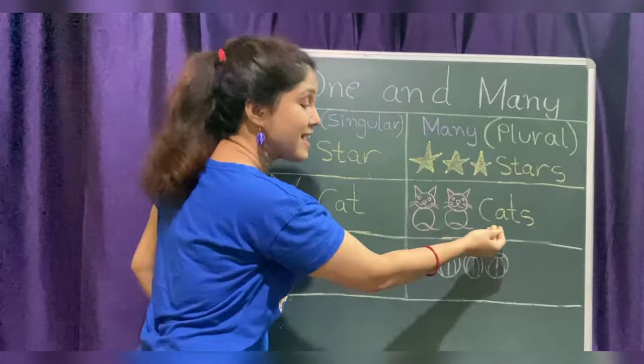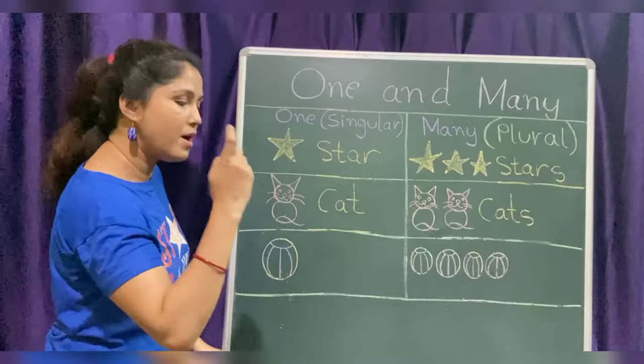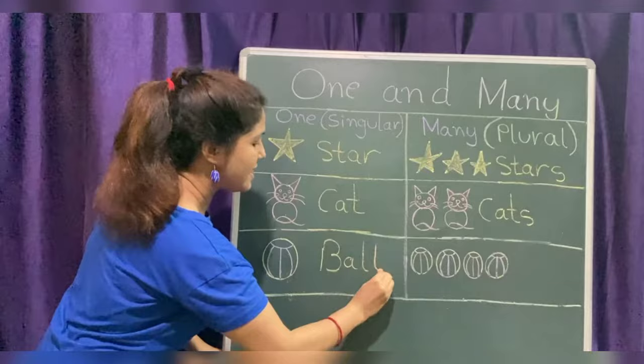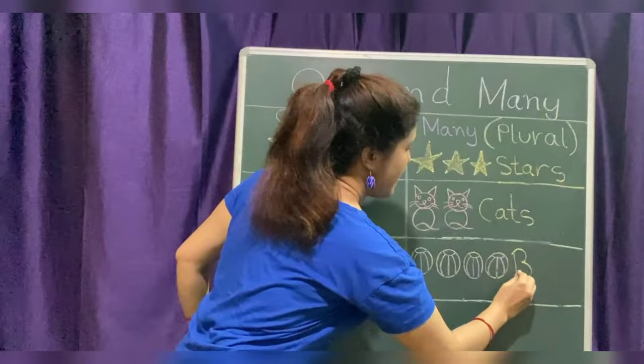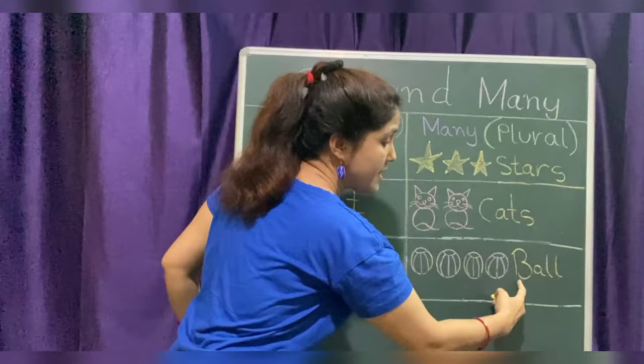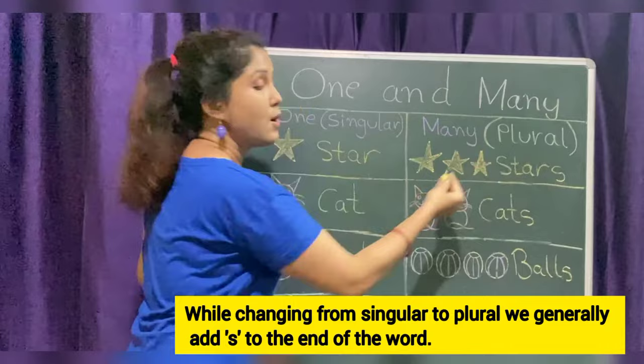Next, what is this, children? This is a ball — we play with a ball, right? So, how many balls? One ball — B, A, L, L — ball. And here, how many balls? One, two, three, four. Four balls — B, A, L, L, S. Now, what are we going to add at the end of the spelling? S. Why are we adding S? I already told you — while changing from singular to plural, we generally add S to the end of the word.